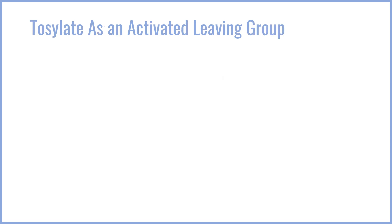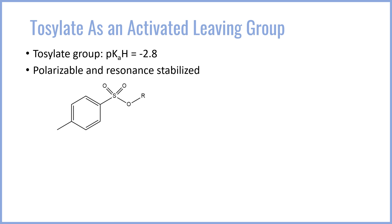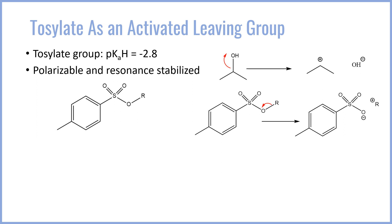There is another way to activate alcohols towards nucleophilic substitution: substituting them first with a tosylate group. The tosylate group has a toluene ring attached to a sulfate group. The tosylate has a conjugate acid pKa of negative 2.8, making it a very good leaving group comparable to a halide. The tosylate group is a good leaving group because it is both polarizable thanks to the sulfur and resonance stabilized thanks to the oxygens on the sulfate part, meaning both SN1 and SN2 substitution are supported.